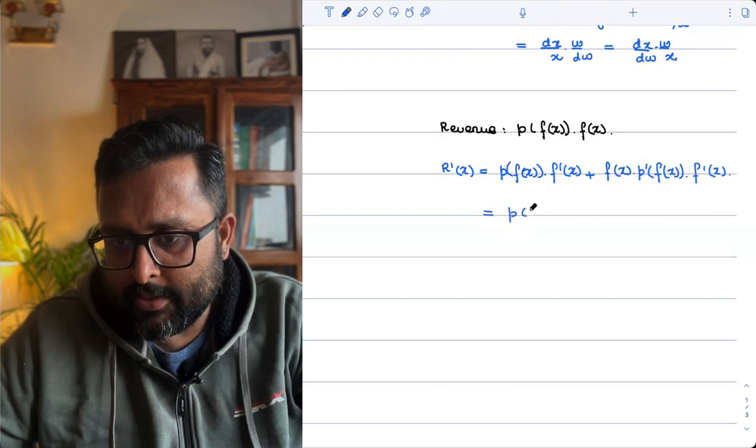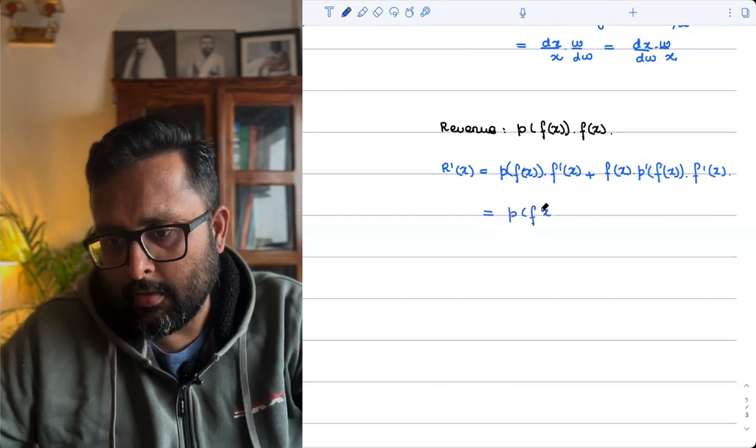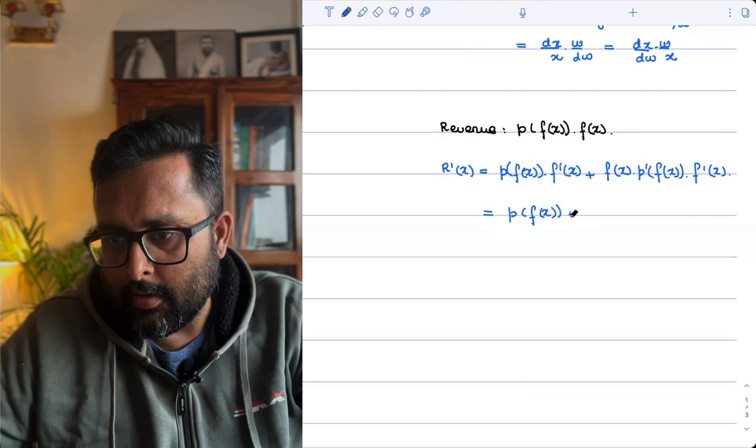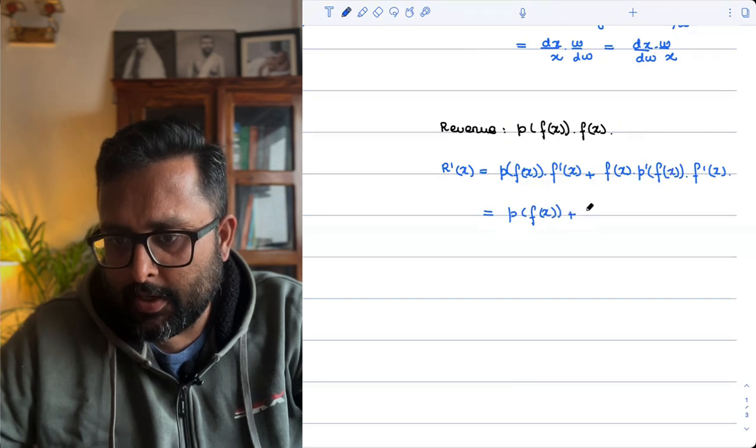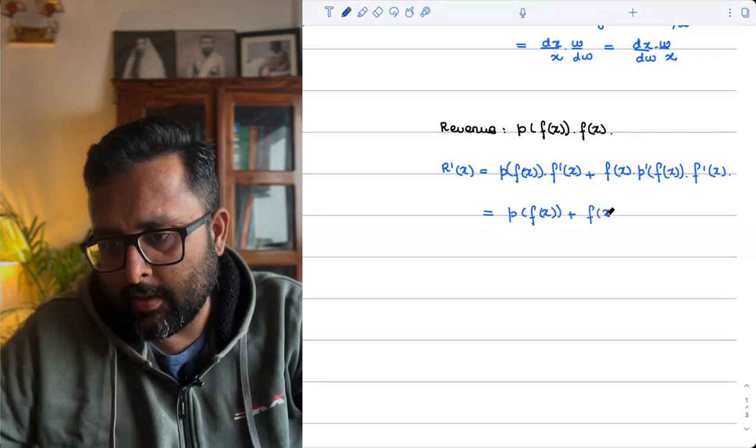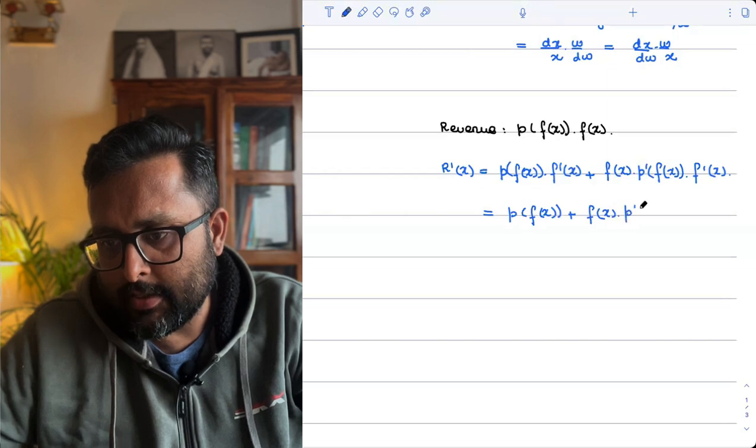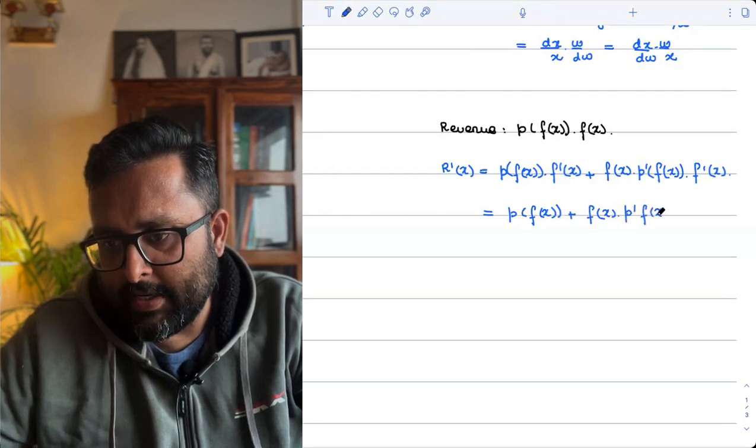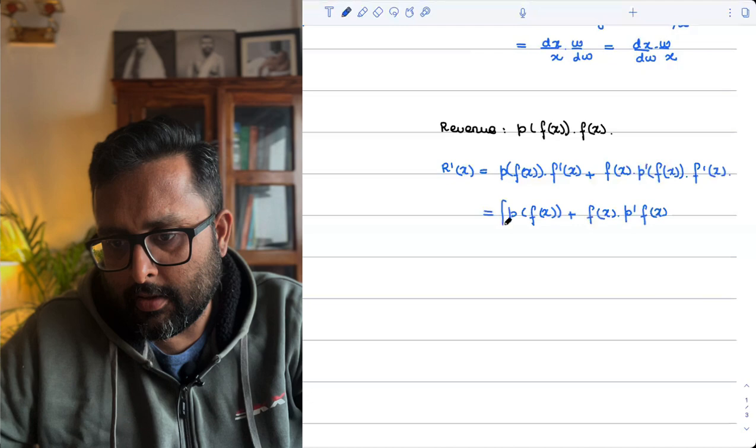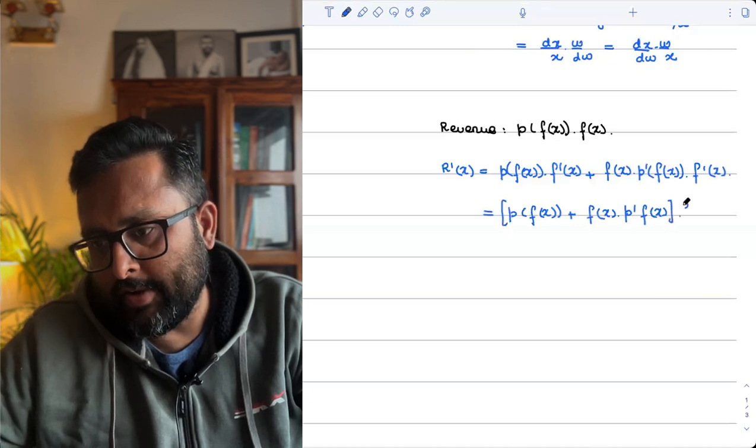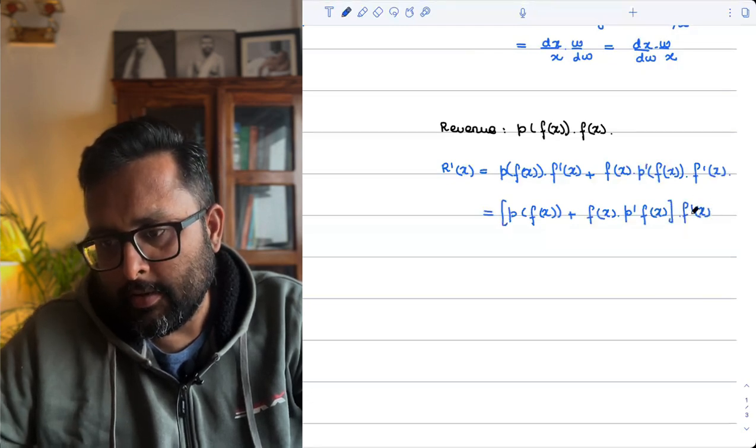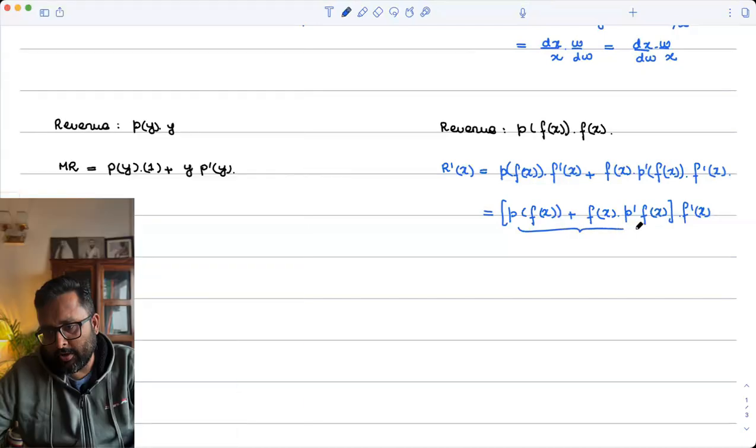Simple. So I can take up F dash X common. So it becomes P FX plus FX times P dash FX into F dash X. We are looking at this. Do you recognize something?